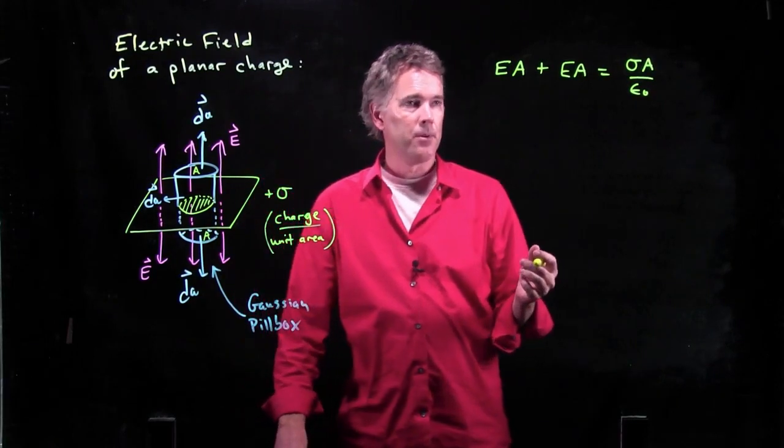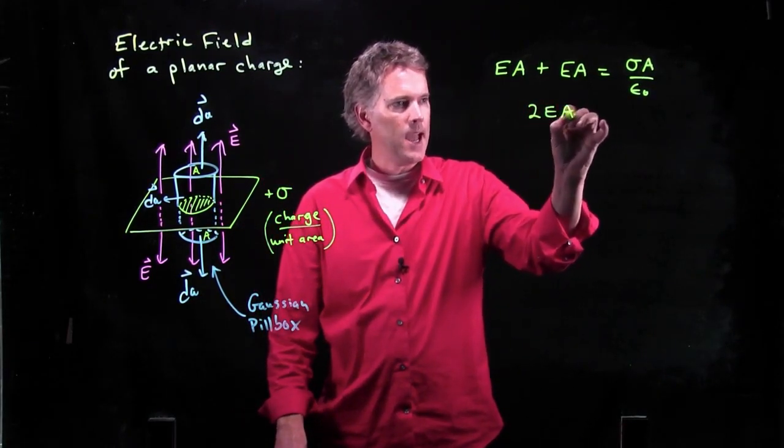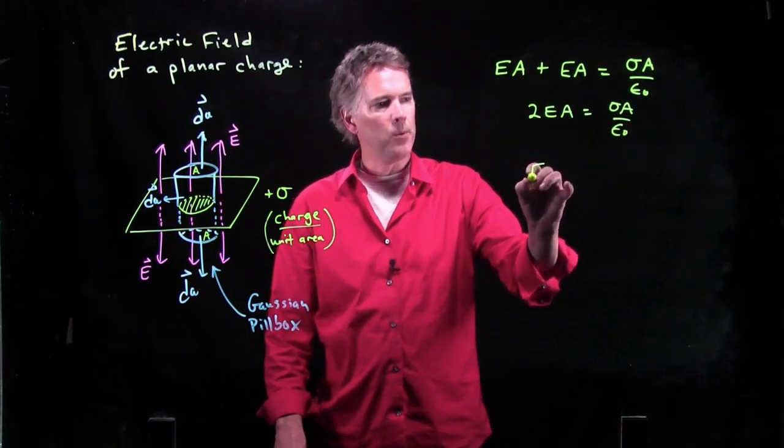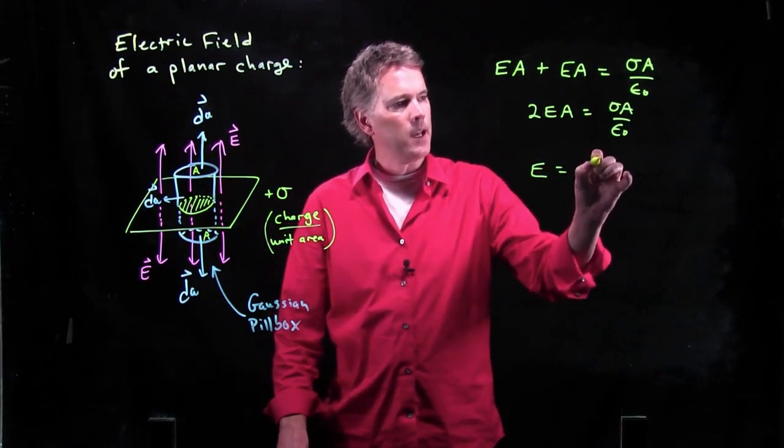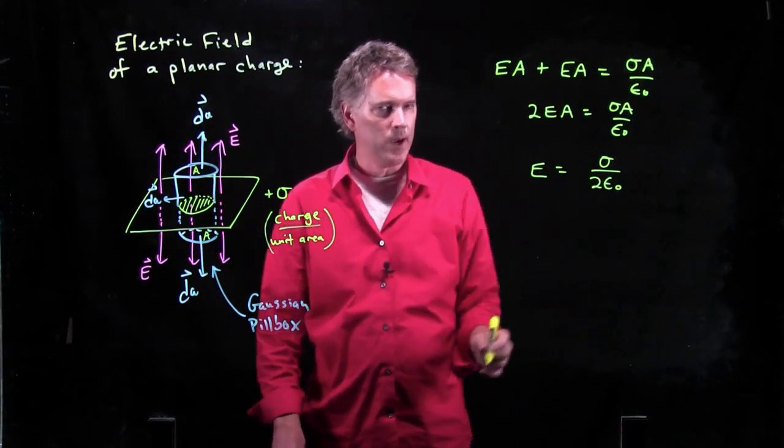And now you see what's going to happen, right? We've got two of these. 2EA equals sigma A over epsilon naught. We cross out the A. We divide by 2. And we get E is equal to sigma over 2 epsilon naught.